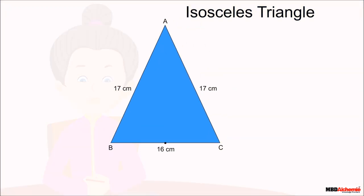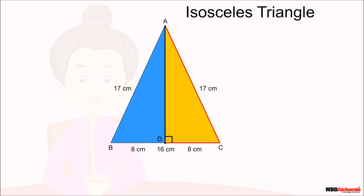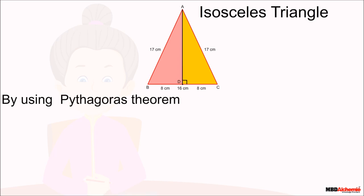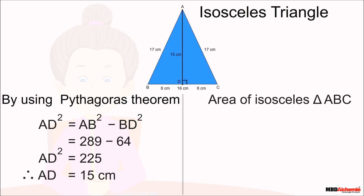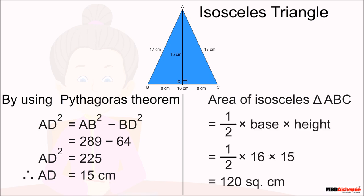To find the height, take the midpoint of the unequal side BC and mark it as D. Since BC is 16 centimeters, BD and DC are each 8 centimeters. Joining A to D forms two right triangles, ADB and ADC. Using the Pythagorean theorem, AD is found to be 15 centimeters. Sophie then applies the formula: area = ½ × base × height to find the area of the isosceles triangle.